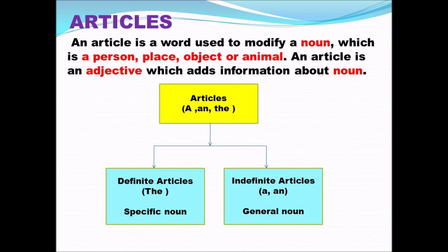An article can also be called an adjective. Why is it so? An adjective means a describing word — it also describes the noun, and the article is doing the same. So an article, like an adjective, adds information about the noun. We use articles before nouns and also before adjectives. What is an article? It is a word used to modify a noun, and it is also an adjective which adds information about the noun.